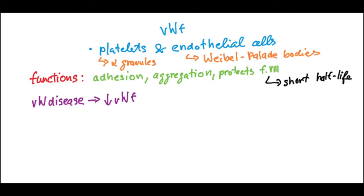This is important to remember because in von Willebrand's disease, which is defined by decreased levels of von Willebrand's factor, patients — especially if levels are severely decreased — will have problems with primary hemostasis. But not only this: because factor eight will also be decreased, they will have problems with secondary hemostasis as well, and these cases could resemble hemophilia.